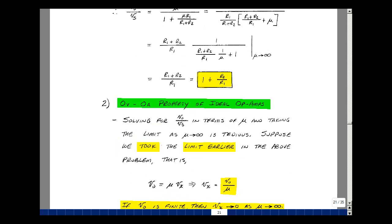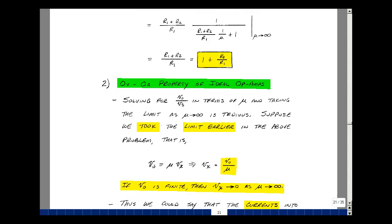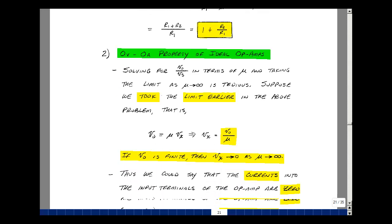Taking the limit as mu goes to infinity is really a technique we would use based on calculus. But is there an easier way to deal with this kind of a problem? I'm going to call this the 0 volt 0 current property of ideal op-amps. Now in solving for V out over V sub S, we derived the equations with the controlled source, then took the limit as mu went to infinity. Suppose that we did that a couple steps earlier.